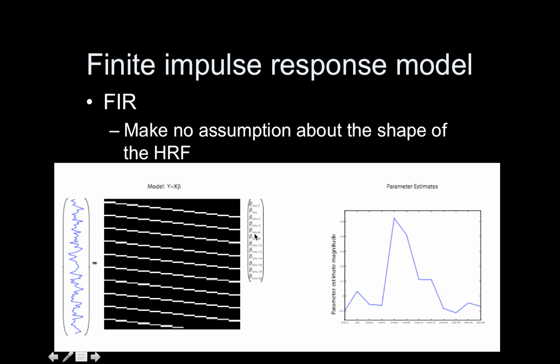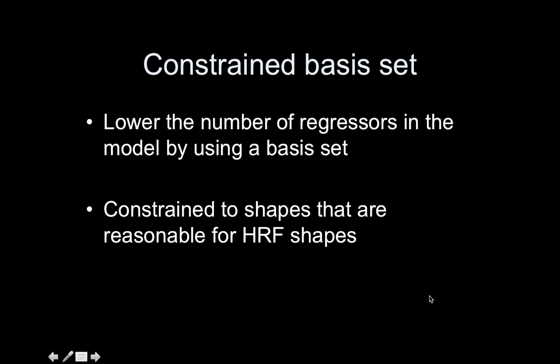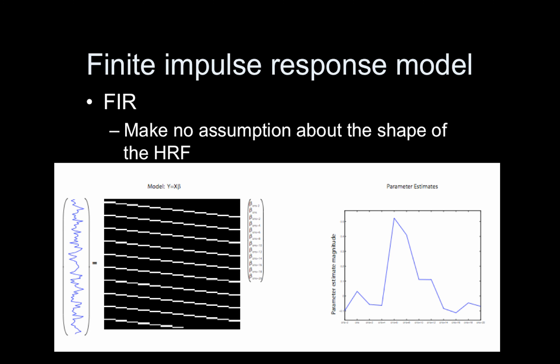Our betas correspond to the average signal in these different time bins, and you can plot the betas directly to get the average response to the stimulus. This model is great because it makes no assumption about the shape of the HRF, but it's pretty noisy — and that's the trade-off. This is a classic bias-variance trade-off. Using a canonical HRF is biased because we assume a very specific shape, but the variance is really low, meaning the predicted BOLD time course is very smooth. Here, it's unbiased — the shape can be anything — but highly variable, because we end up with a wiggly response. Only 10 TRs of noisy BOLD data go into each time point average.